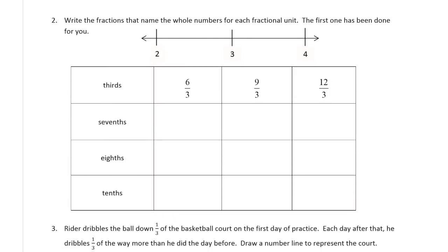Write the fractions that name the whole numbers for each fractional unit. The first one has been done for you. So, the whole numbers. So for thirds, that would be 6 thirds, 9 thirds, and 12 thirds. 6 thirds is 2 wholes, 9 thirds is 3 wholes, and for 4 wholes, it's 12 thirds.